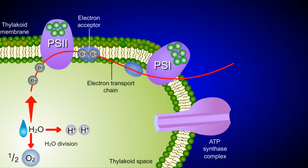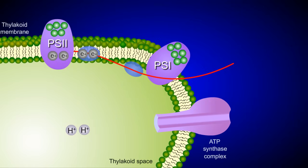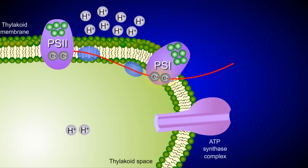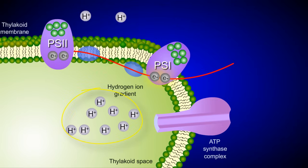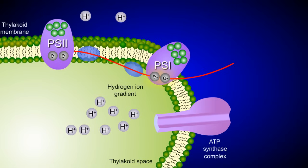The first set of electrons continues to move down the electron transport chain, releasing stored energy as it moves. This energy is used to create a hydrogen ion gradient. A protein in the electron transport chain pumps hydrogen ions from the stroma into the thylakoid space, creating a high concentration of ions in the thylakoid space relative to the low concentration of ions in the stroma.